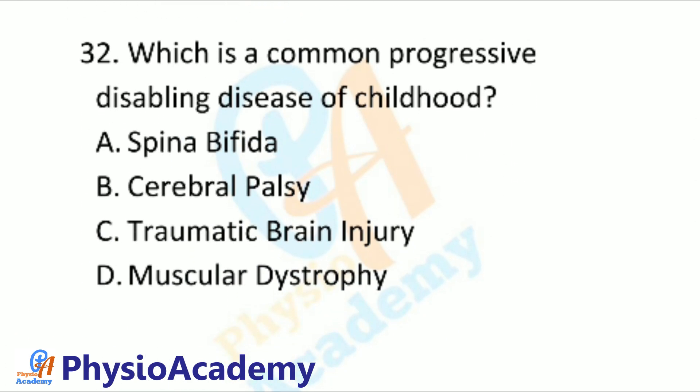Question number 32: Which is a common progressive disabling disease of children? Option A: Spina bifida. Option B: Cerebral palsy. Option C: Traumatic brain injury. Option D: Muscular dystrophy.